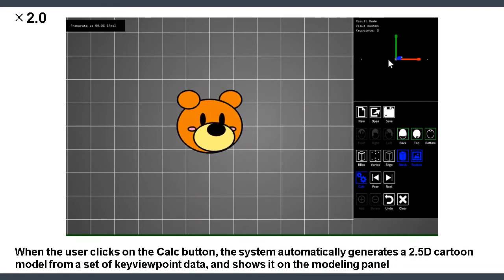When the user clicks on the Calc button, the system automatically generates a 2.5D cartoon model from a set of key viewpoint data.